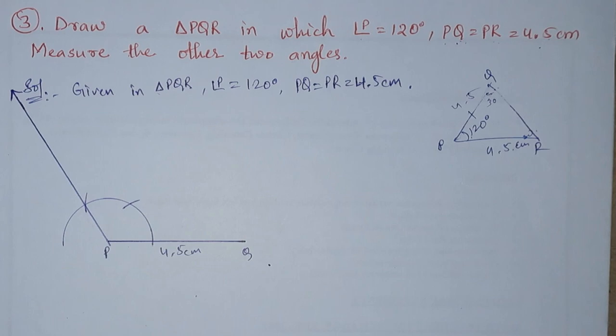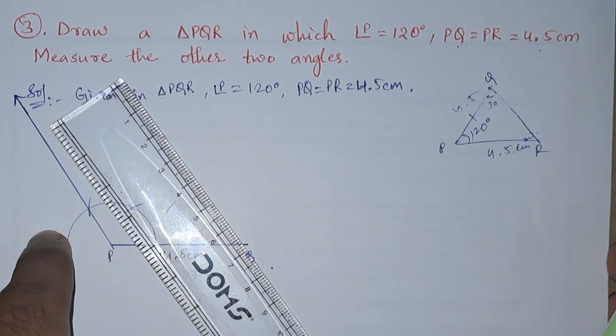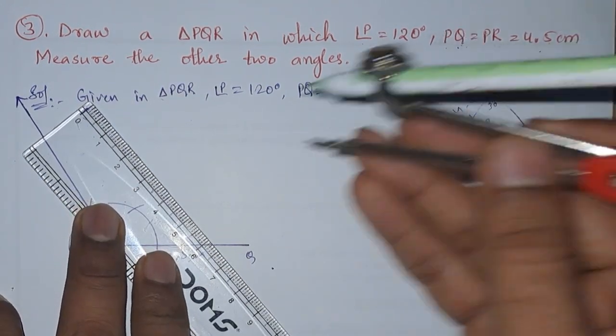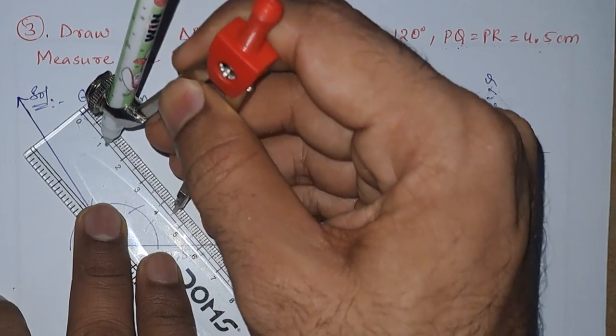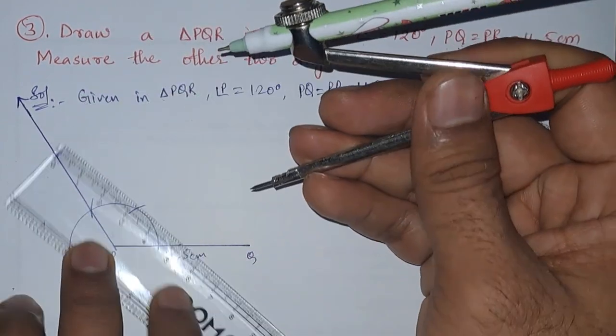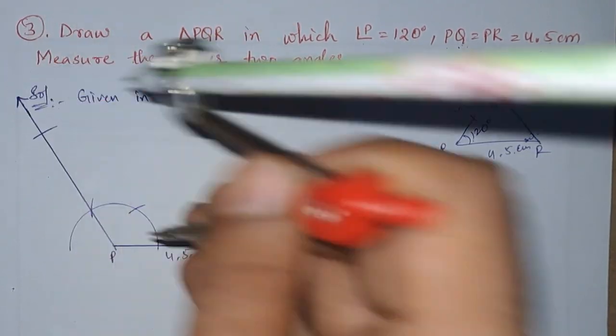Next is the other side, that is PR. And PR is 4.5 centimeters. So we need to stretch like this from P to R. So we got it here.